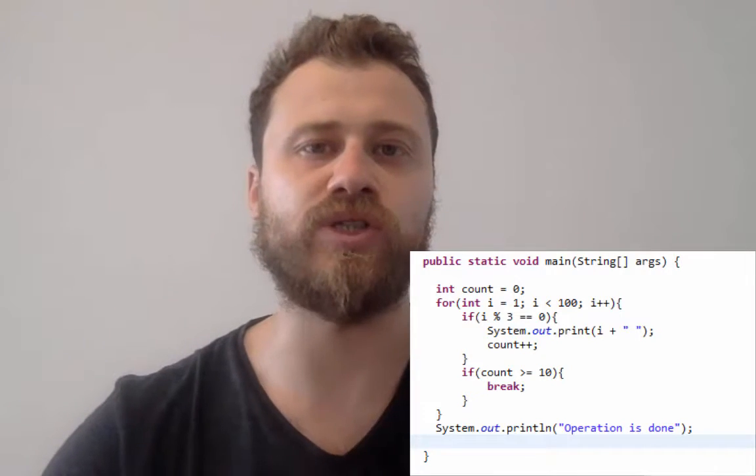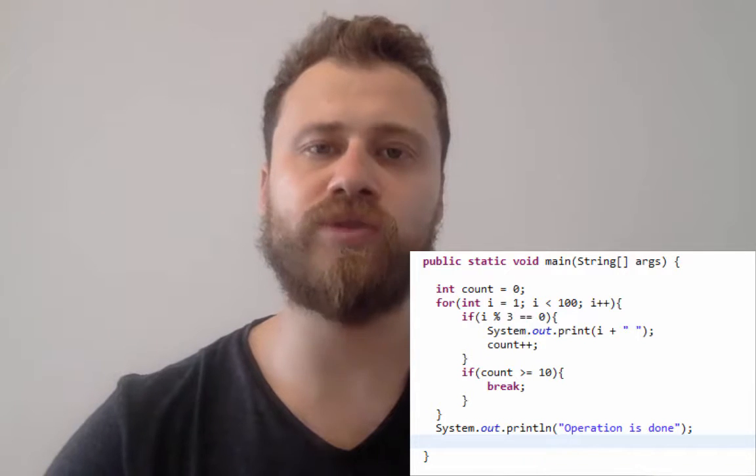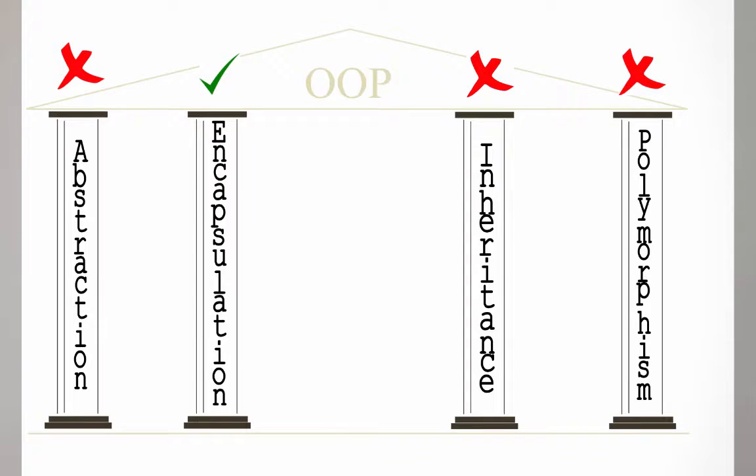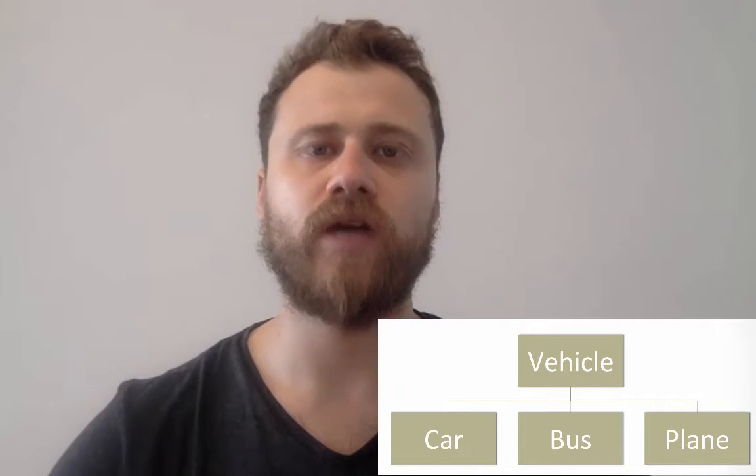In this course, we will first talk about why we need Java and why it is number one. Then we will learn programming basics that you may use in each programming language. Then we will learn object-oriented programming and its rules: inheritance, abstraction, polymorphism, and composition. We will support each item with clear examples.